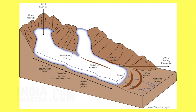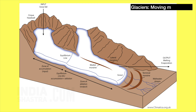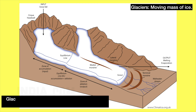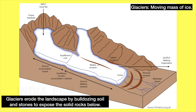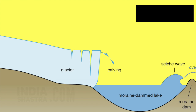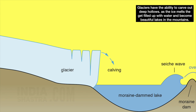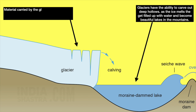Now let us talk about the work of ice. We will discuss landscapes made by glaciers. Glaciers are moving masses of ice — in short, they are rivers of ice. Glaciers erode the landscape by bulldozing soil and stones to expose the solid rocks below. Glaciers have the ability to carve out deep hollows. As the ice melts, these hollows get filled with water and become beautiful glacial lakes in the mountains. As material carried by the glaciers — such as big and small rocks, sands and silt — gets deposited, these deposits form glacial moraines.